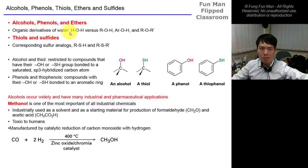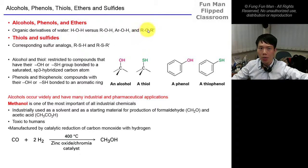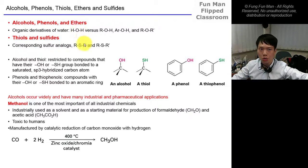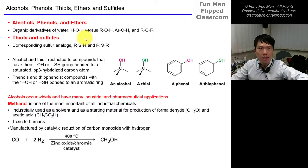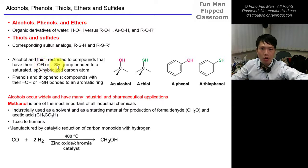Alcohol is R-OH, phenol is Ar-OH, and ether is R-O-R. For thiols and sulfites, they are the corresponding sulfur analogs — we replace oxygen with sulfur. They all come from Group 6, the chalcogen series. For alcohol and thiol, compounds must have the OH or SH group bonded to a saturated, sp3-hybridized carbon atom.